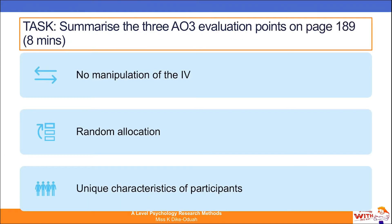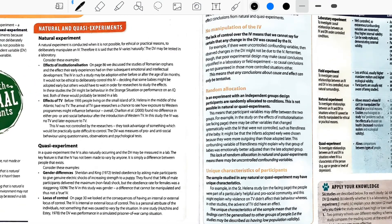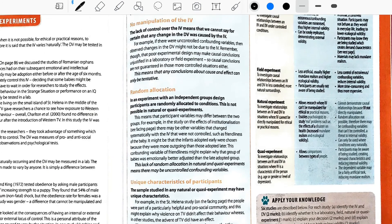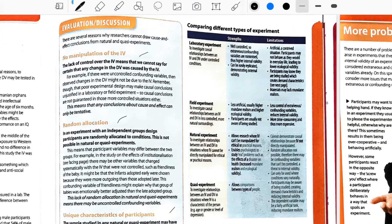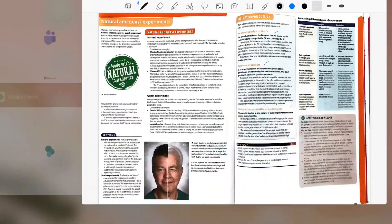At this point, I want you to have a look at page 189, where you will find three evaluation paragraphs titled 'No Manipulation of the Independent Variable,' 'Random Allocation,' and 'Unique Characteristics of Participants.' Take eight minutes to summarise these AO3 evaluation points as part of your notes. I'm going to quickly show you the textbook page — this is page 189 — and you can see the three evaluation points here. You may also want to look at the comparison of different types of experiments, though that comparison is not exhaustive.